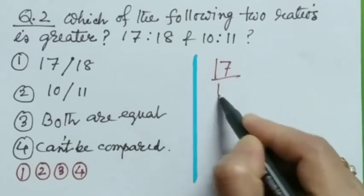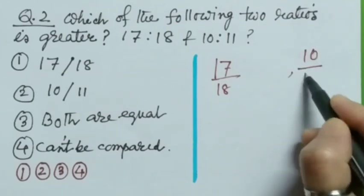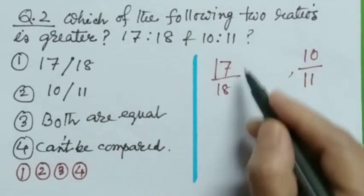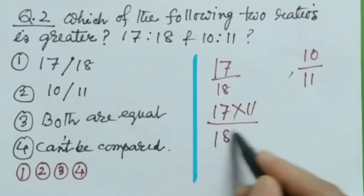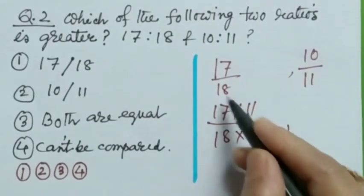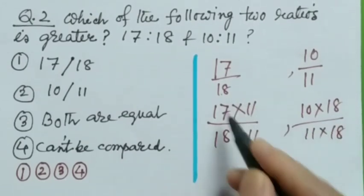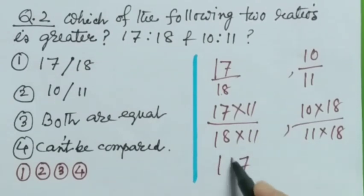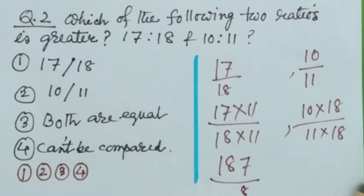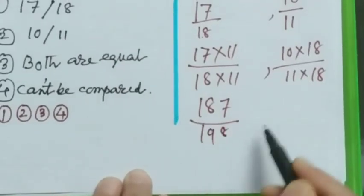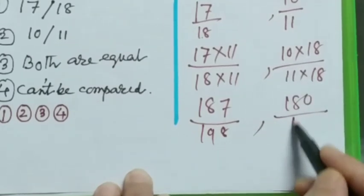17 divided by 18, that means 17 is to 18. And another one is 10 divided by 11. Now I am multiplying this with both numerator and denominator with 11. 17 into 11 by 18 into 11. And this one I am doing with 18. 10 into 18, 11 into 18. Now it becomes 187 by 198. And this one is 180 divided by 198.